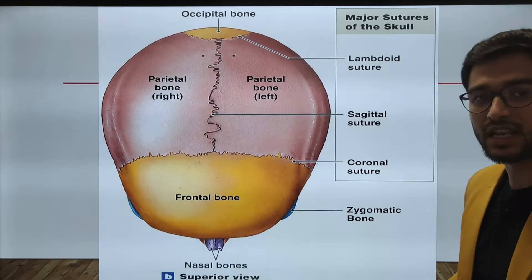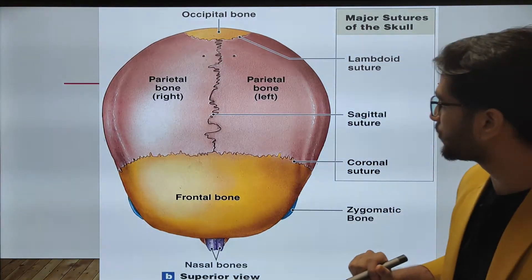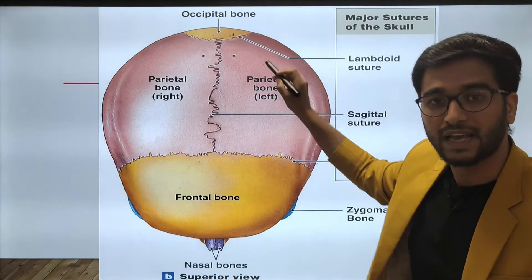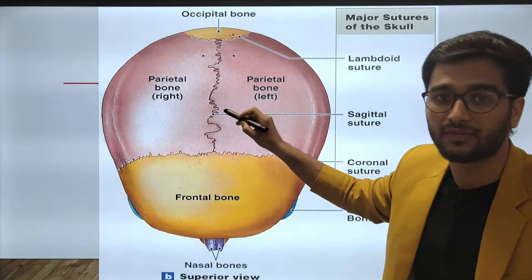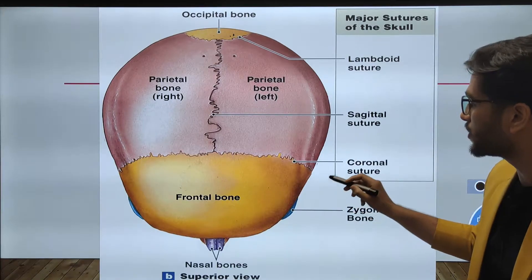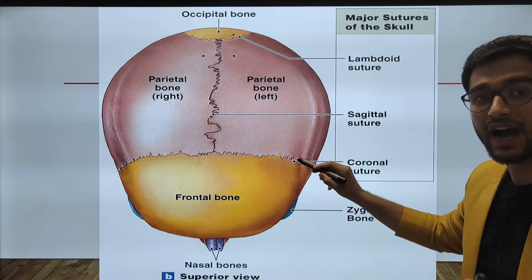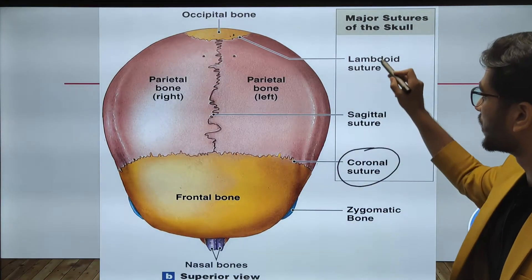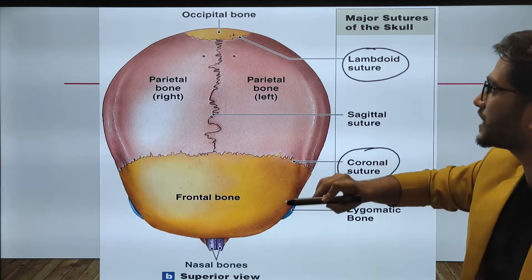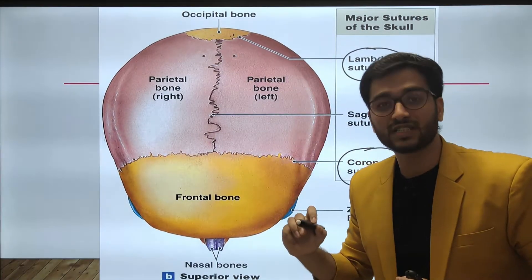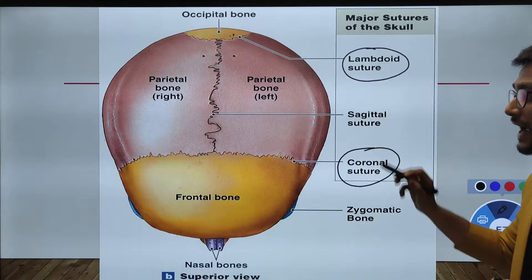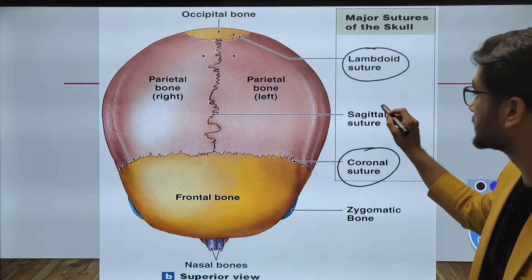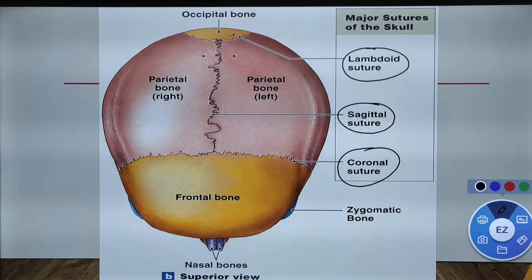In the superior view of the cranium, we find the frontal bone, the occipital bone, and the right and left parietal bones. The frontal and parietal bones are joined together with the fibrous coronal suture. Behind that, the parietal bone is conjoined with the occipital bone with the lambdoid suture, and the suture between the two parietal bones is the sagittal suture.